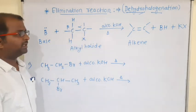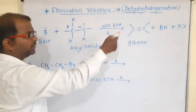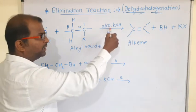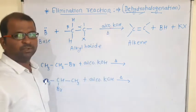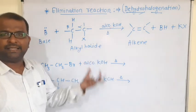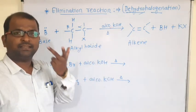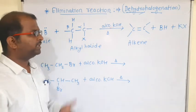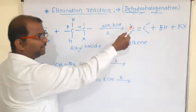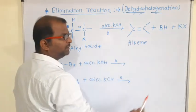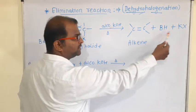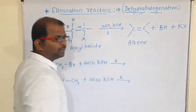Using alcoholic KOH with heating or boiling gives an alkene as the product. The reaction uses KOH under these conditions to produce the alkene.